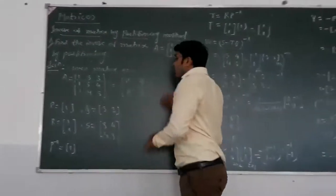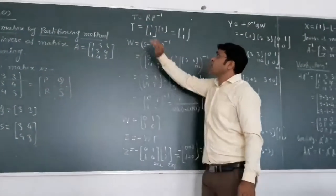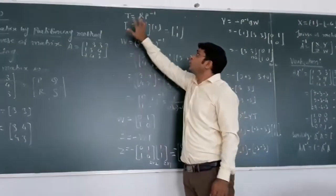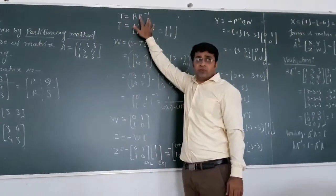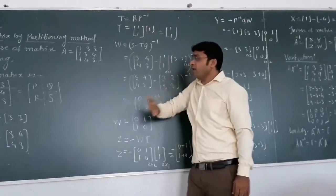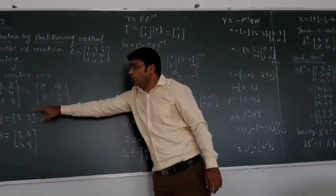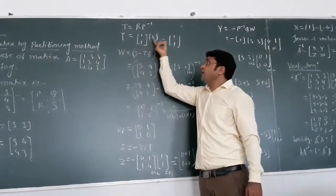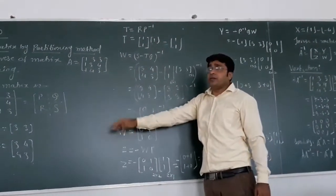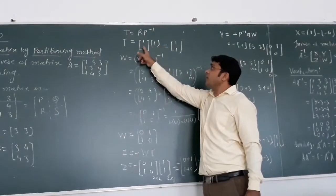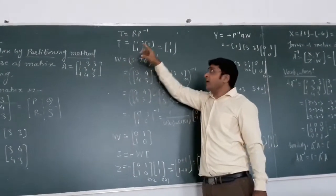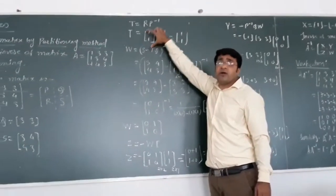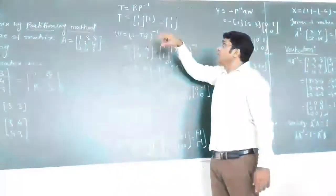After getting P, Q, R, S, and P inverse, our process starts to find out the inverse of the matrix. First, we find T, which is R multiplied by P inverse. R is the column matrix [1, -1]. We already have P inverse as 1, so multiplying an identity matrix by any matrix gives the same matrix. Therefore T equals [1, -1].